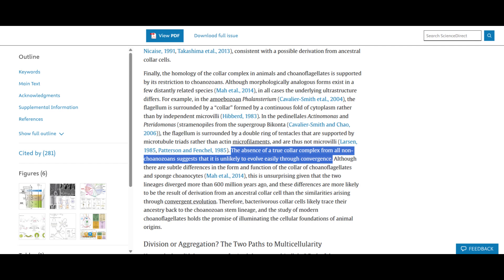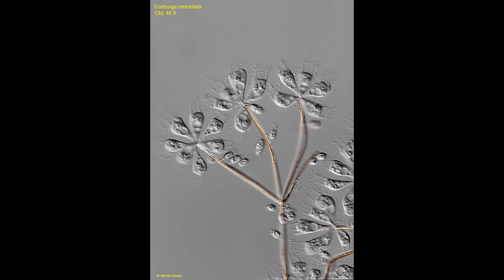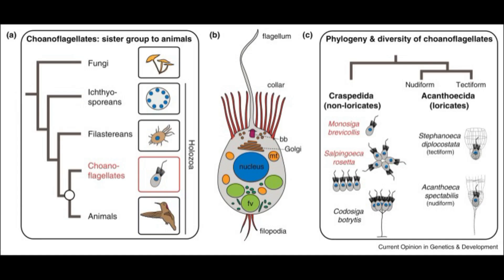They attribute differences between the two to natural selection over the more than 600 million years separating the lineages. The first description of a choanoflagellate was by American naturalist Henry James Clark in 1866, and he immediately recognized the similarities between these protozoans and sponge choanocytes. English marine biologist William Savile Kent also enthusiastically supported this relationship, even naming one colonial choanoflagellate Proterospongia, meaning first sponge. Proterospongia has since been falsified as a genus, apparently being the colonial stage of the life cycle of various choanoflagellate species. Genetic analyses have strongly contradicted suggestions that choanoflagellates might be paraphyletic to animals, placing all extant choanoflagellates in a single monophyletic clade sister to Animalia.